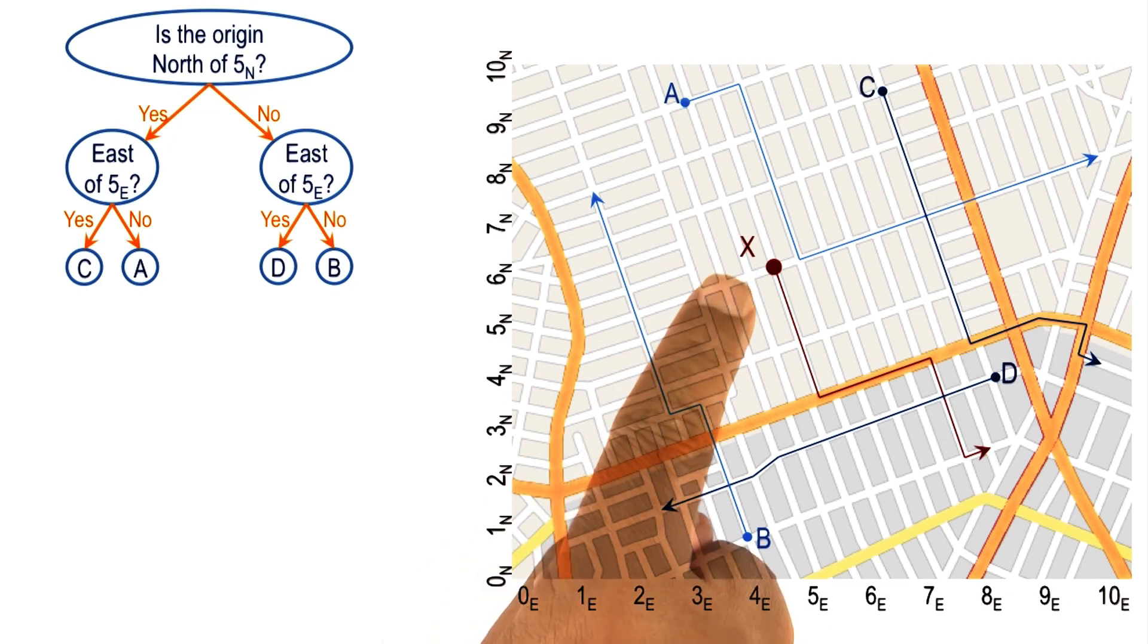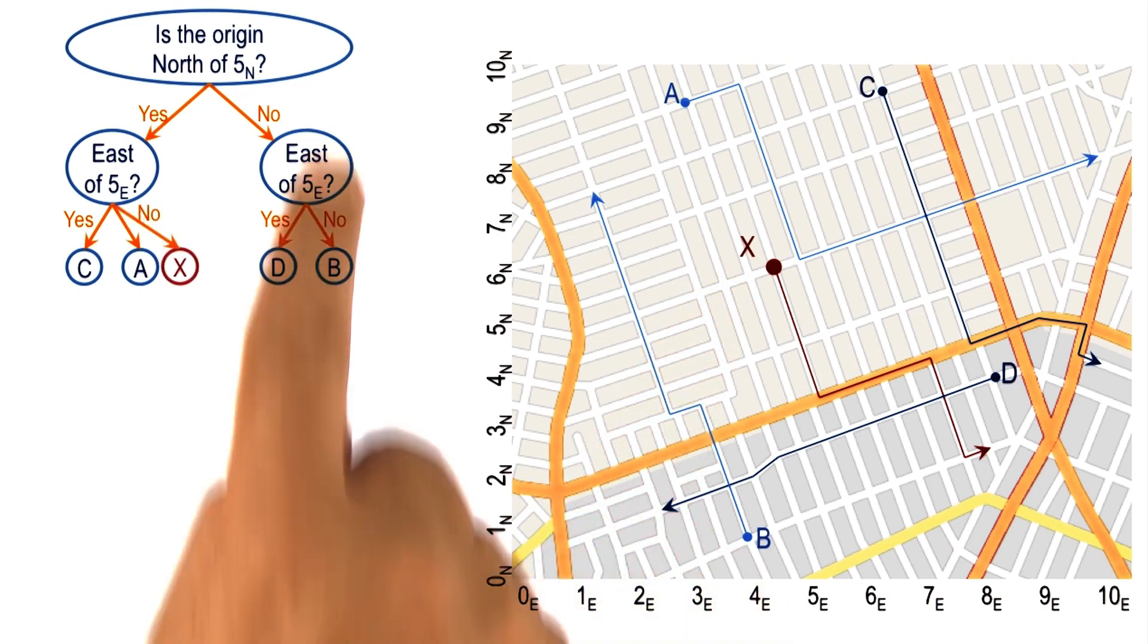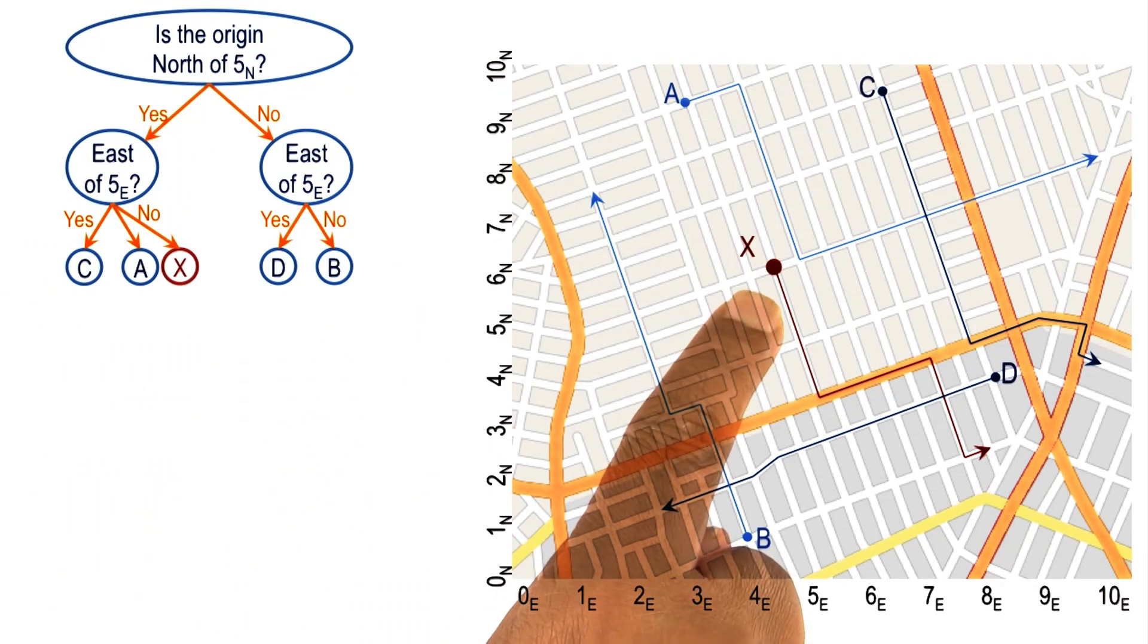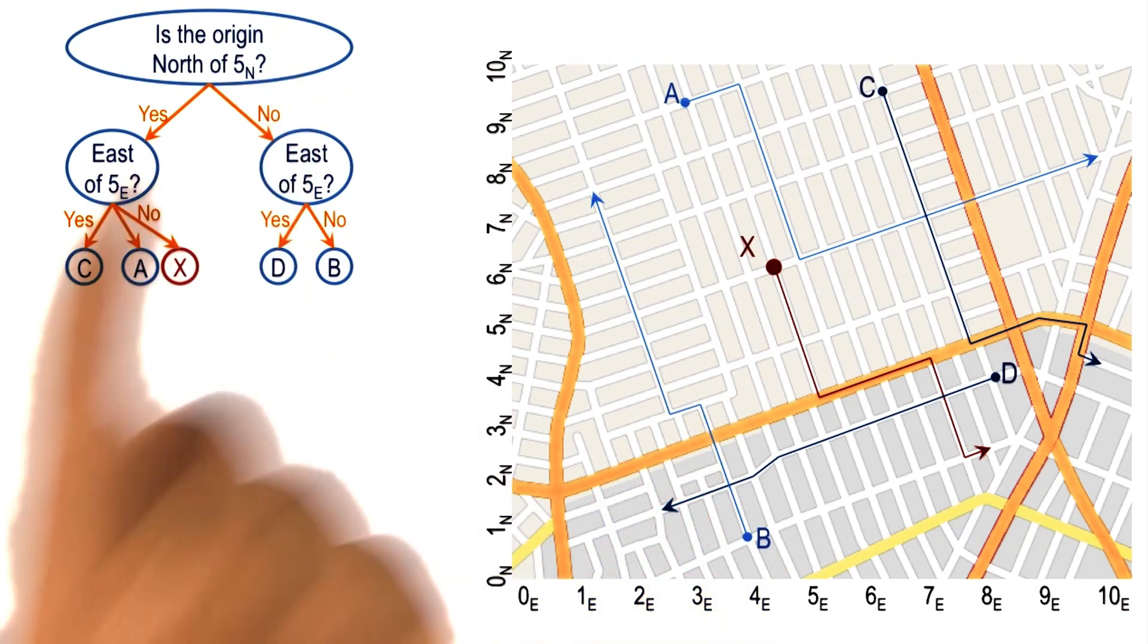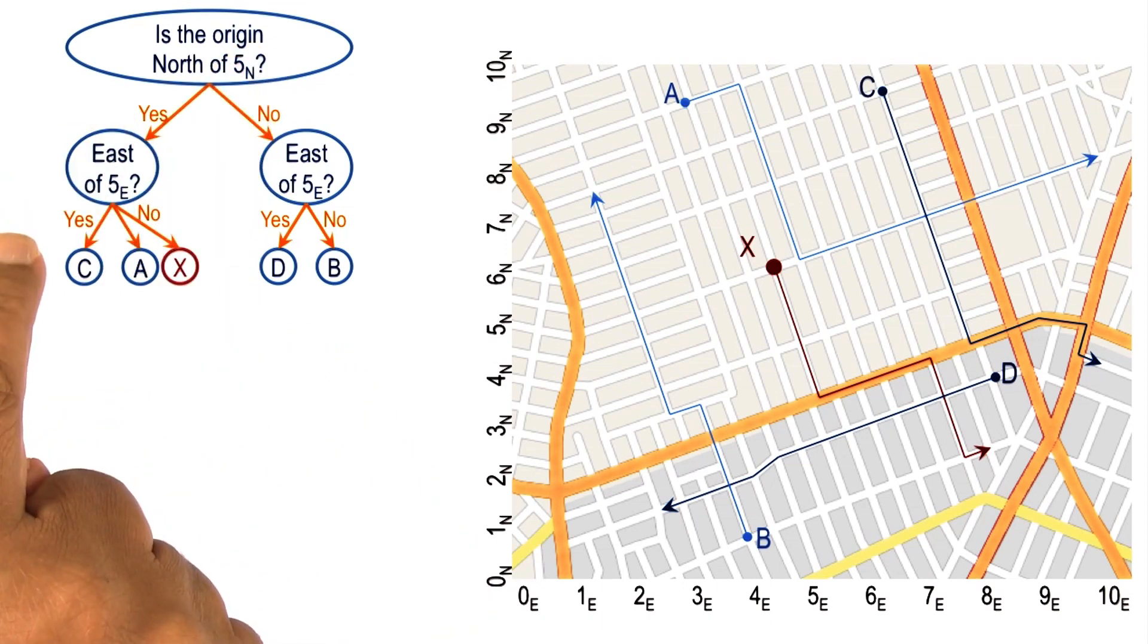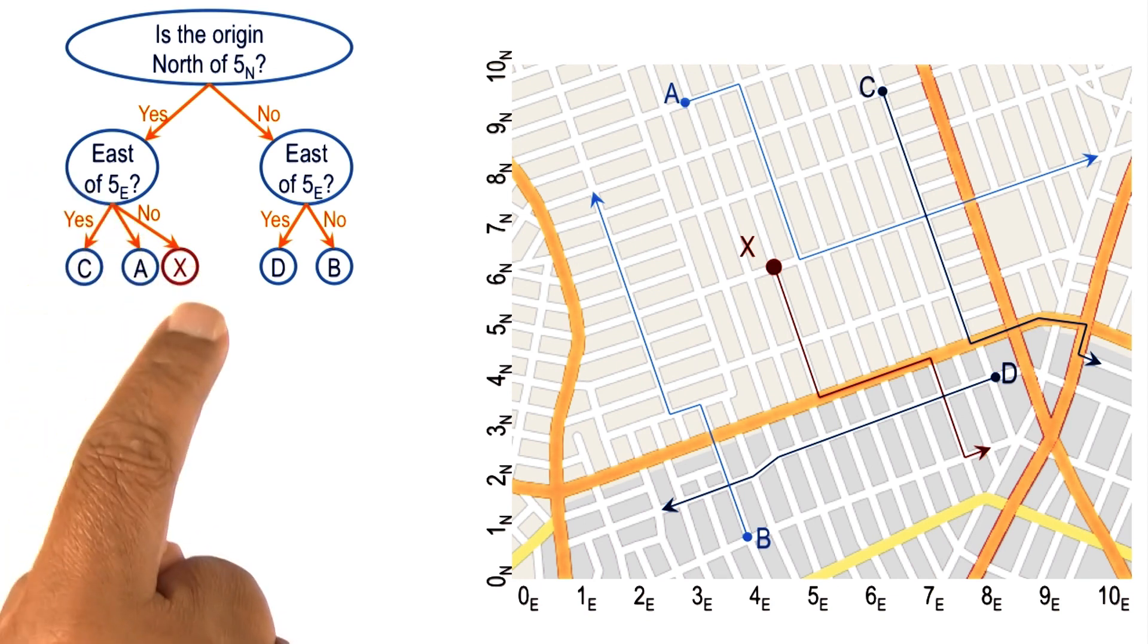Imagine that there is a new case x. So we can navigate this tree using x. Is the origin of x north of 5 of n? Yes, it is. So we come to this branch. Is the origin of x east of 5 of e? No, it is not. So we come to this branch.